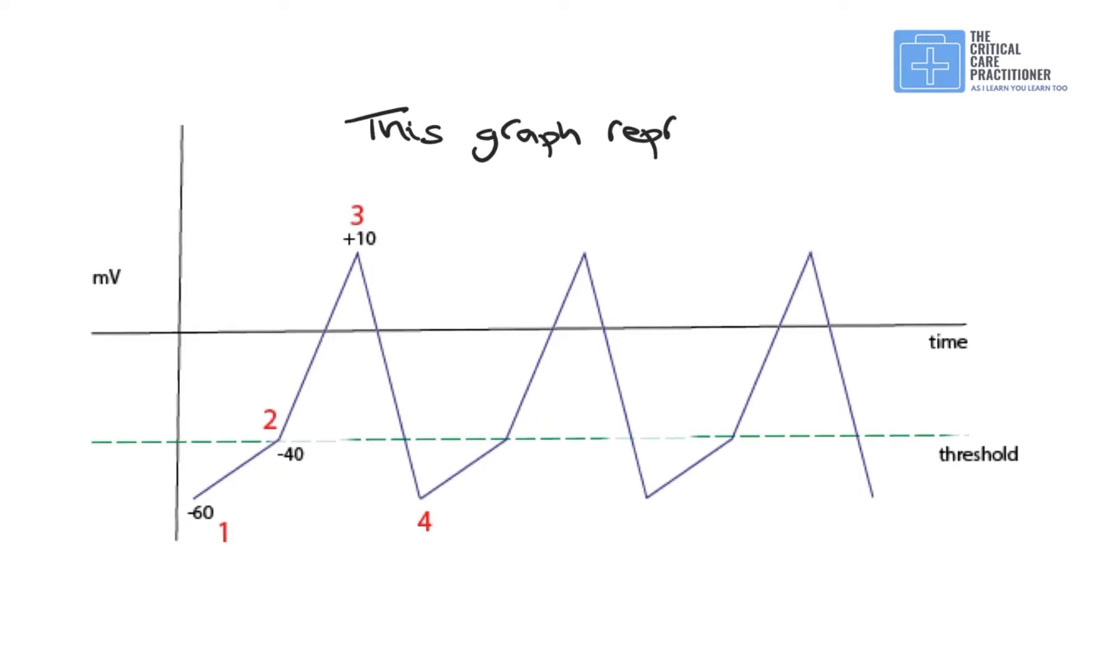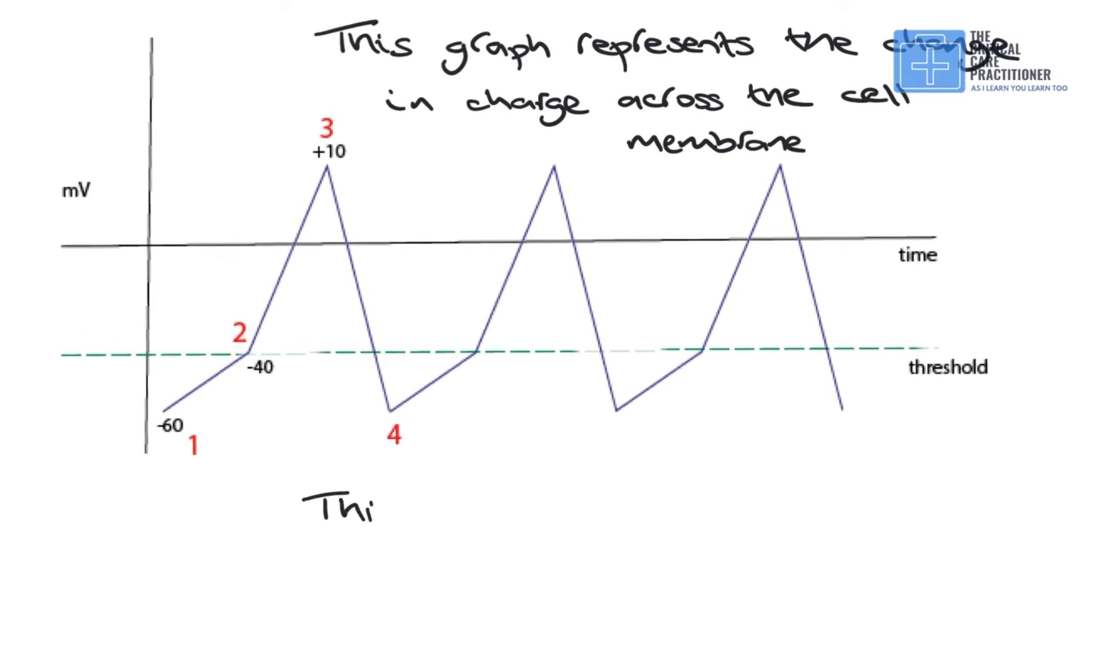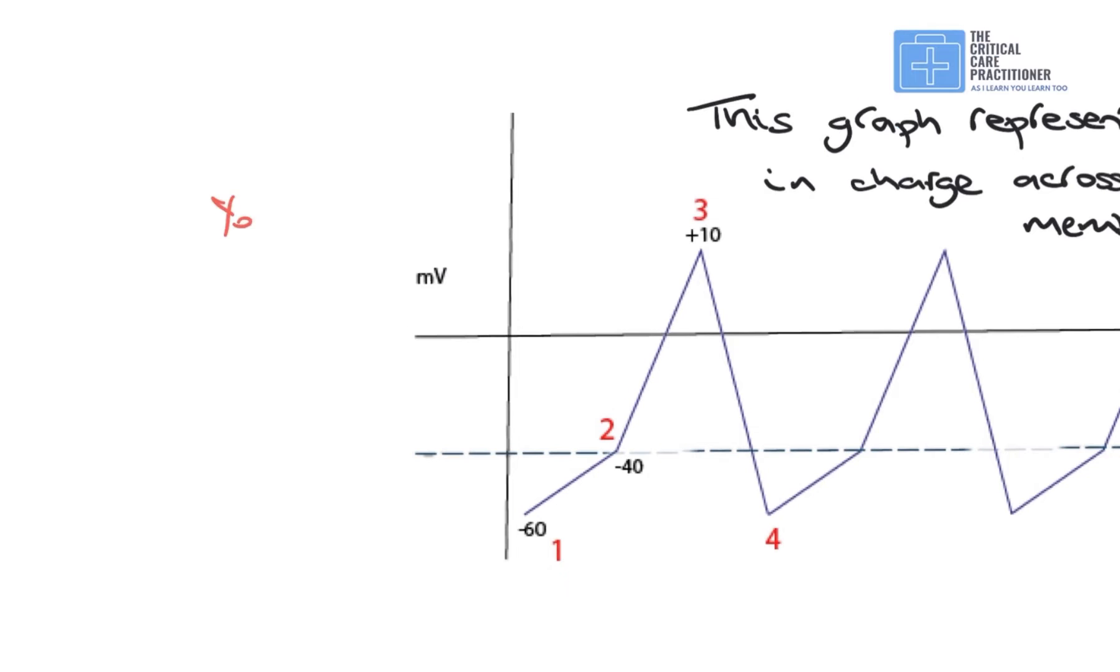This graph represents the charge across the cell wall, which is important to understand when understanding the electrical activity within the heart. And this change in charge is achieved by the movement of ions across the cell wall. We'll talk about some of those ions now, and you can see why those are important when we're looking after the patient with cardiac problems. So you can see here that the charge starts mainly negative and then goes slightly positive and then returns to a negative value. And I'm going to explain to you now how that happens.